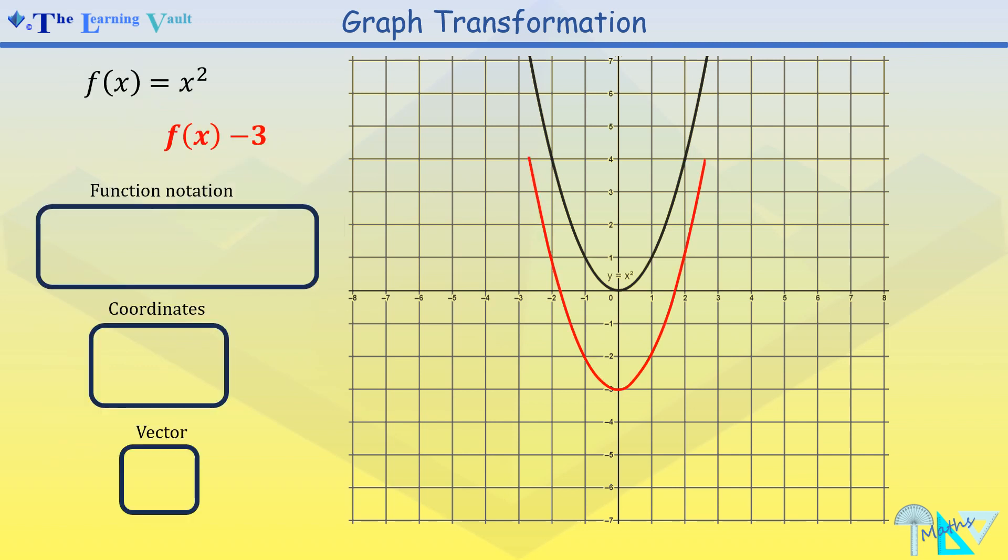We can observe clearly that when we subtract a constant from the function, the graph moves k units down. In this case our x coordinate remains the same but our y becomes y minus k. And our vector displacement is 0 minus k.